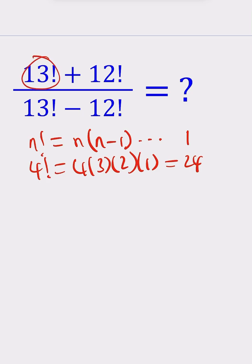13 factorial is such a large number. You're going to multiply 13, 12, 11, and so forth, all the way down to 1. Even 5 factorial is 120, 6 factorial is 720, and 7 factorial is 5040 — they grow really quickly. So 13 factorial is such a large number that we shouldn't really evaluate it directly.